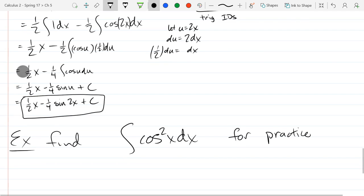So the last example problem I'll just leave for practice is going to be almost the same steps that we just took, but do that for cos squared x.